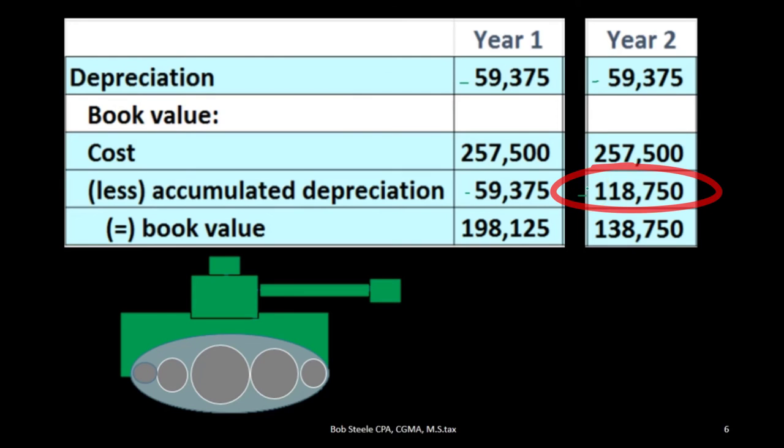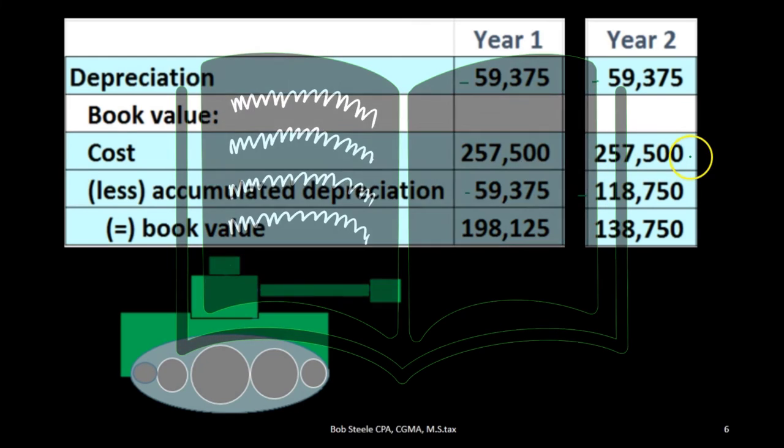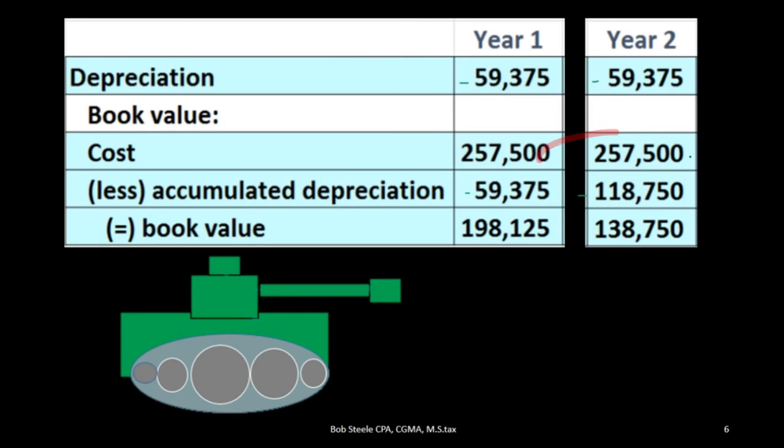Therefore the book value in year two would be $257,500 minus the $118,750 accumulated depreciation for a book value of $138,750, as opposed to year one where we had the same cost of $257,500 minus one year's accumulated depreciation of $59,375 for a book value of $198,125.